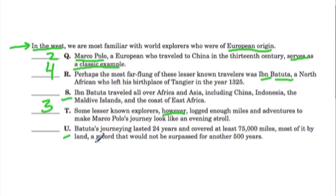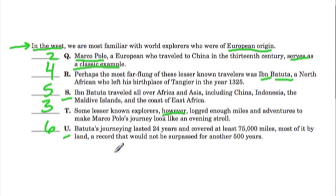Then U re-emphasizes that travel by stating exactly how long it lasted and how far he went: Battuta's journeying lasted 24 years and covered at least 75,000 miles, most of it by land — a record that would not be surpassed for another 500 years. This serves as a strong closing sentence.